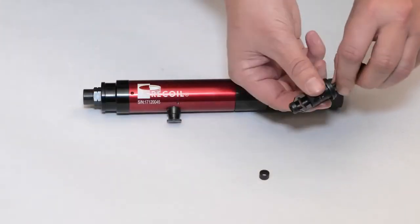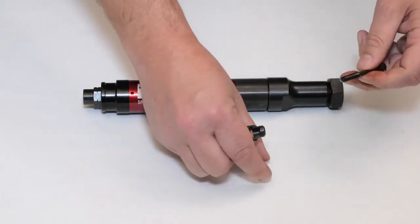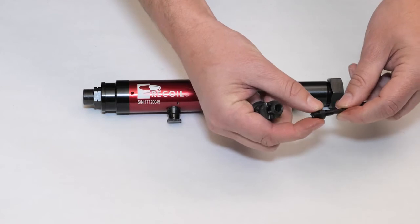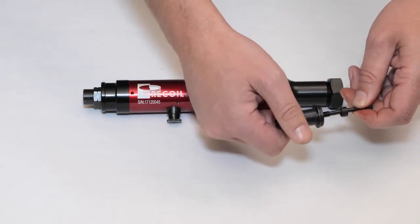First, unscrew the mandrel completely out, and place the spacer over the mandrel before screwing the mandrel back into the nozzle. Then replace the assembled FEA into the adapter and hand tighten.